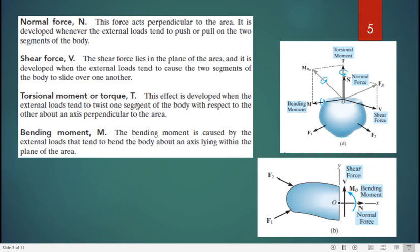Torsional moment or torque. This effect is developed when the external loads tend to twist one segment of the body with respect to other about an axis perpendicular to the area. If this is the area, cross circular, let's say, perpendicular to this is this axis. About this axis, about this normal axis, moment will be torque, perpendicular moment as written here.